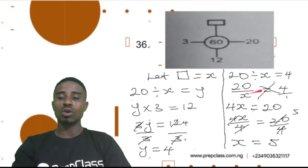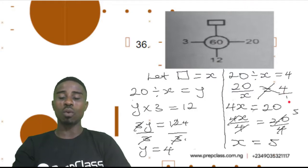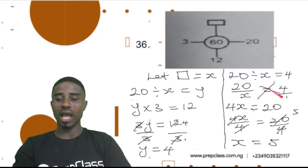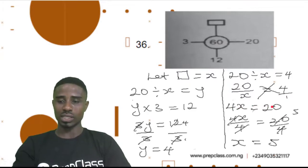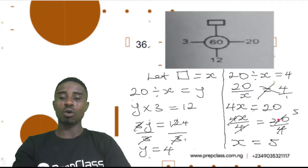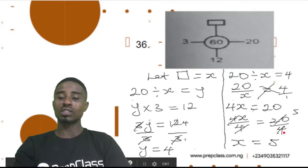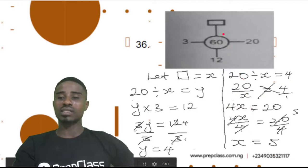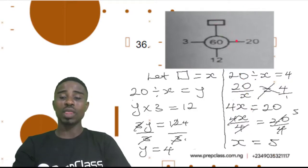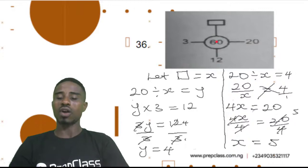Since this is a fraction, we write 4 in the form of a fraction: 4 over 1, because 4 divided by 1 is still 4. Then we cross multiply: x times 4 and 20 times 1. x times 4 gives us 4x equal to 20. We divide both sides by 4 to find the value of x. 4 will cancel 4, and 20 divided by 4 gives us 5. So x equals 5. If our correct answer is 5, it means 20 divided by 5 gives us 4, 4 times 3 gives us 12, and 12 times 5 gives us 60. So our correct answer is 5.